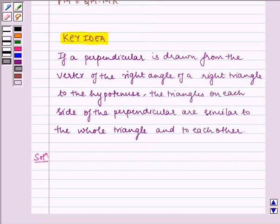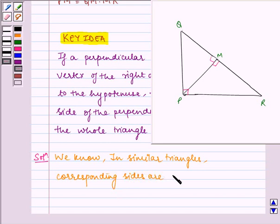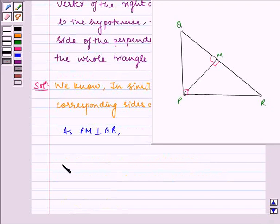We know in similar triangles corresponding sides are proportional. So now, as PM is perpendicular to QR, therefore triangle PRM is similar to triangle QPM.